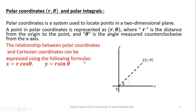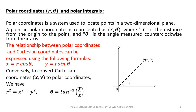These are the transformation equations: x is equal to R cos theta, y is equal to R sin theta. They are used to convert Cartesian coordinates into polar coordinates. For the reverse process we have R squared is equal to x squared plus y squared, and theta is equal to the inverse tangent of y over x.